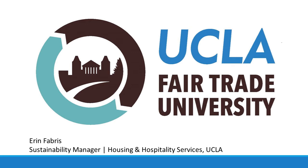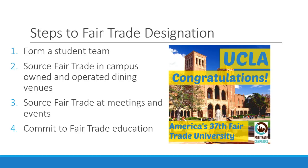When UCLA became a Fair Trade university, we were the largest university to receive a Fair Trade designation at that time — that was in 2016. We're no longer the largest, but we're still the largest Fair Trade university in California. The journey to becoming a Fair Trade university took about four years, but it's something UCLA is really proud of and continues to promote. I'll talk about the steps it took for us and some of the partnerships we made along the way. The steps are: form a student team of at least four students and one non-student; source Fair Trade items in all campus-owned dining venues; source Fair Trade meetings and events; and commit to Fair Trade education by completing two educational activities each academic term.